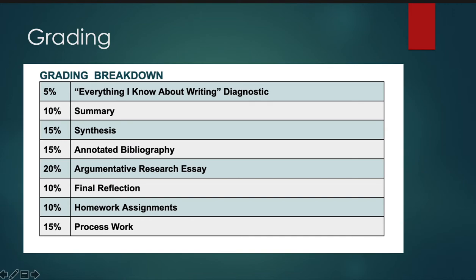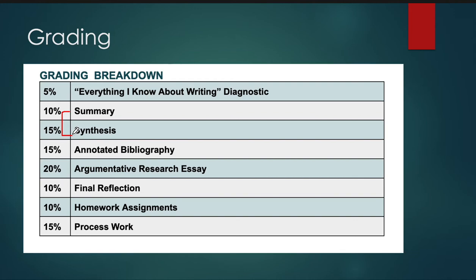For this particular course, the grades are broken down — you can see on the screen here. One important thing to note is that everything in this course is kind of stacked and scaffolded. The summary and the synthesis project are actually a two-part project where you'll write a summary about one article and then build on that summary into a synthesis. The same thing goes for the annotated bibliography and the argumentative research essay — you'll do an annotated bibliography of your sources and then turn that into a research essay.